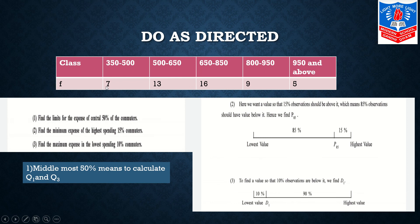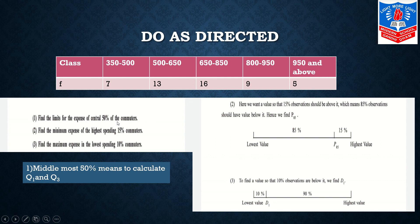Now students, over here we have classes and frequency given. Three basic questions are asked. The very first one is to find the limits for the expense of central 50% of the commuters. Whenever central 50% is asked, we also call it middle most 50%. This means you have to calculate Q1 and Q3. Then in last you write the statement: the middle most 50% will be between Q1 and Q3.